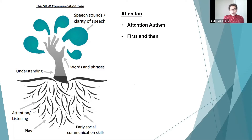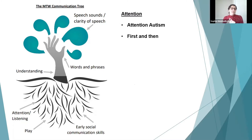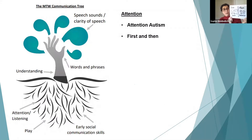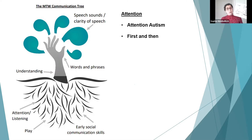I worked with a child previously who struggled to get in the car but loved swimming. Even though they understood the language and had been told 'first car, then swimming,' they couldn't remember that swimming was coming. We put the visual on the back of the parent's car seat so they could look at it throughout the journey. For the boards, I use a whiteboard because it's easy to rub out. Once you've done the first activity, cross it out so they can clearly see the 'then' activity is coming.